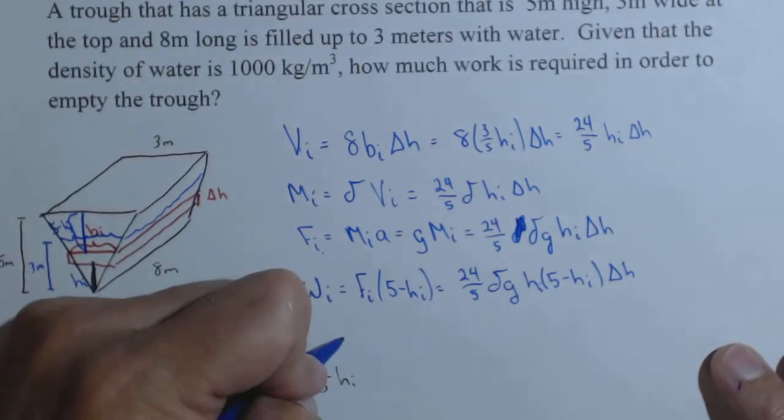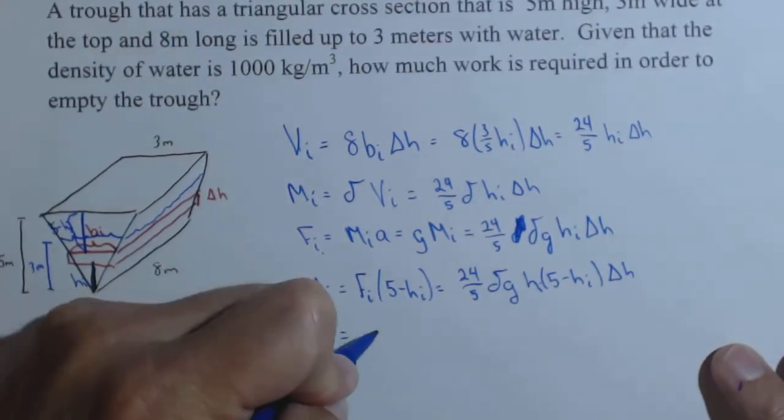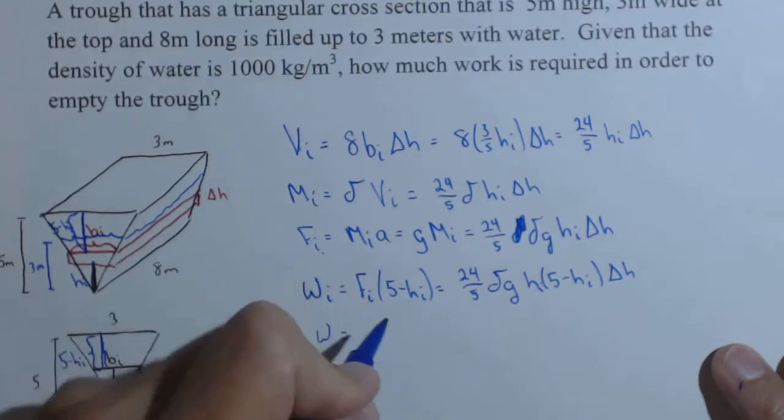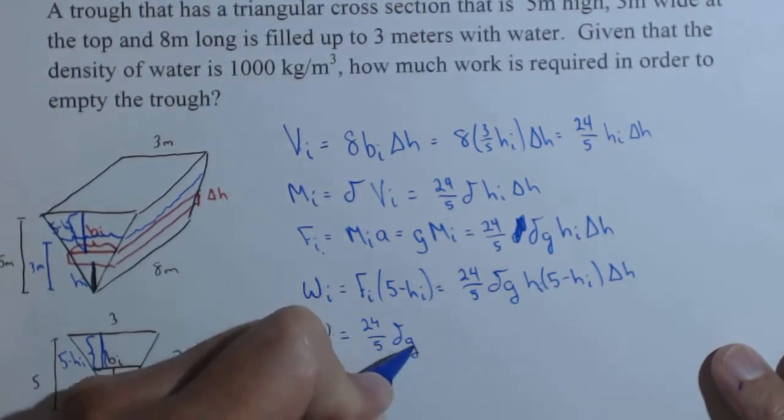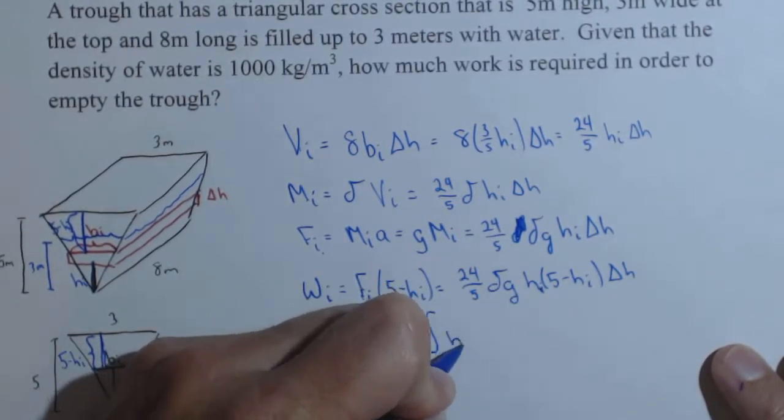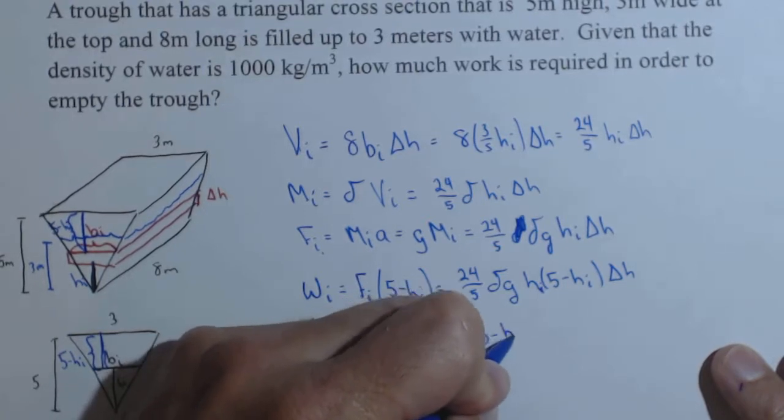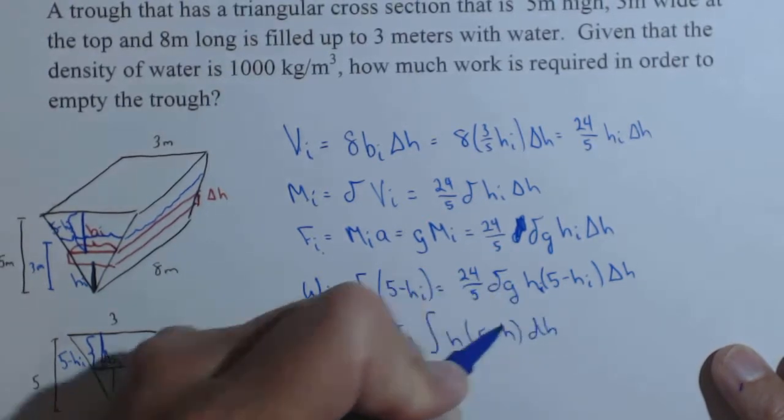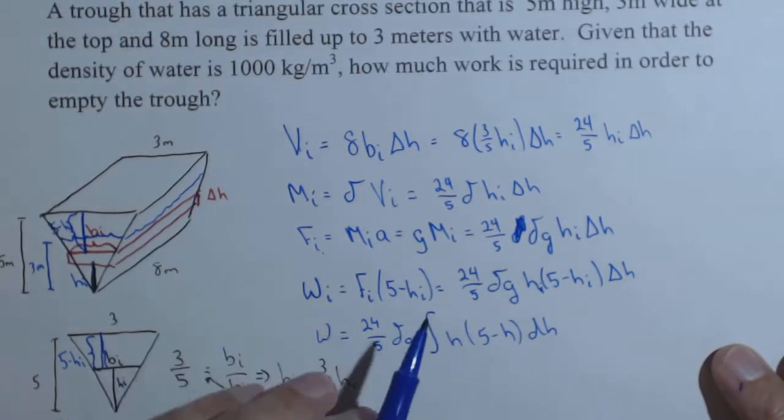So the work is going to be, I'm going to pull all the constants out, 24 fifths delta g, because it turns out the integral itself is actually not so bad. H times 5 minus H dH.